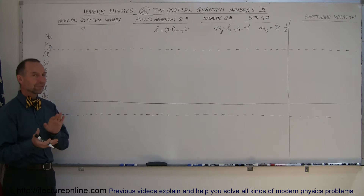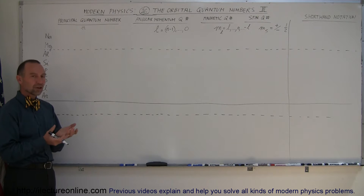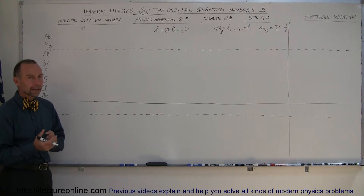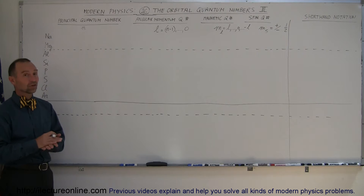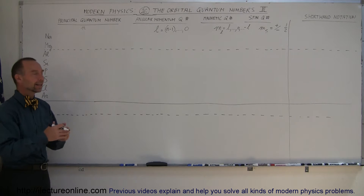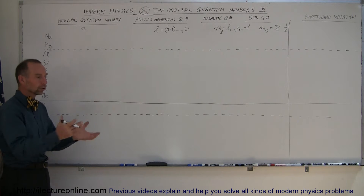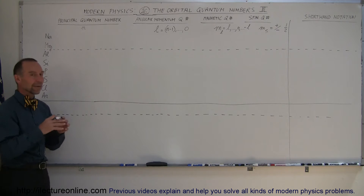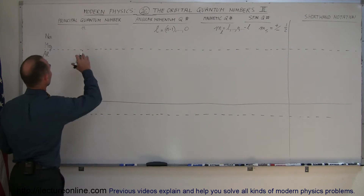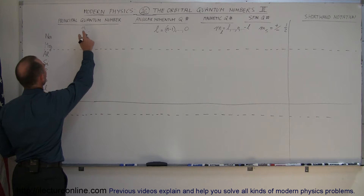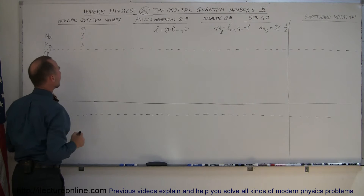We have already filled the first two shells, the K-shell and the L-shell — the first energy level and the second energy level — so any additional electrons placed into orbits around the nucleus, like for sodium, now have to go into the third energy level. Therefore the principal quantum number for sodium and magnesium will both be three.